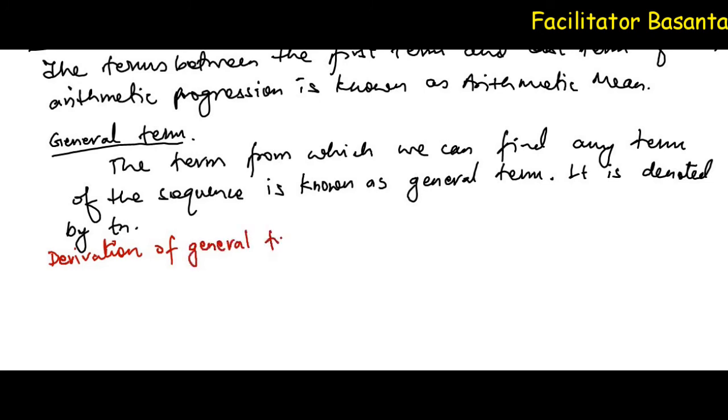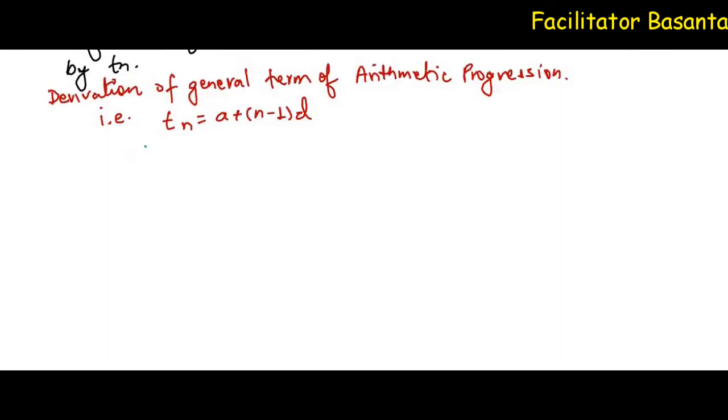Derivation of the general term of arithmetic progression: tn = a + (n-1)d. For this, let us suppose